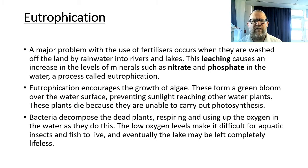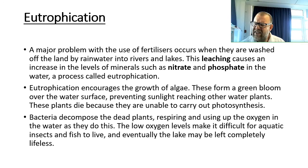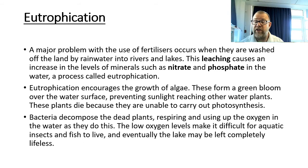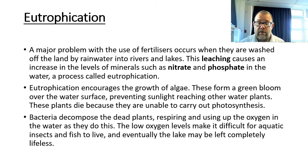Eutrophication is a major problem caused by fertilisers being washed off the land by rainwater. This leaching — the movement of fertilisers from fields into rivers — increases levels of minerals such as nitrates and phosphates in the water. Eutrophication encourages the growth of algae, which form a green bloom covering the river or water surface — it could be a pond or lake — preventing sunlight from reaching other water plants. Those plants die because they can't carry out photosynthesis, then bacteria decompose the dead plants, respiring and using up all the oxygen in the water, so fish and insects can't survive and the water becomes lifeless.